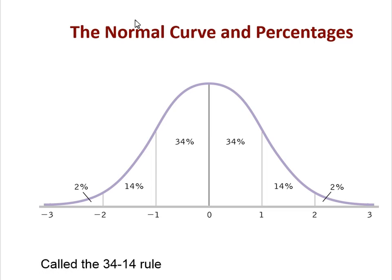The 34-14 rule: if you remember 34-14, that's 68% in the middle between Z = -1 and Z = 1. Adding the two 14% chunks gets you to 96%, with only 4% left in the tails — about 2% on each side. That adds up to 50% on each half, and the whole thing adds up to 100%. Even though R can tell us these percentages exactly, I always suggest drawing it first so you know if you've typed your code correctly.